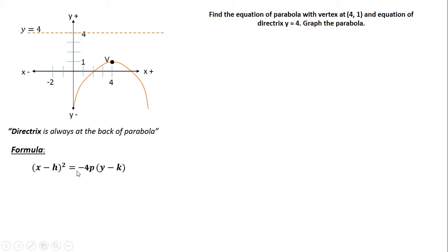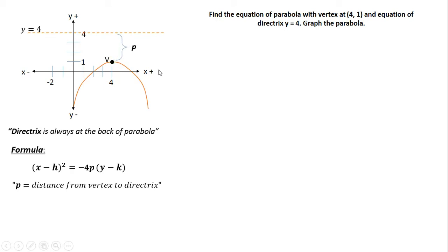To solve for p, we find the distance from the vertex to the directrix — that's our p. Just count from the vertex to the directrix, starting on the next point: 1, 2, 3. So p = 3.